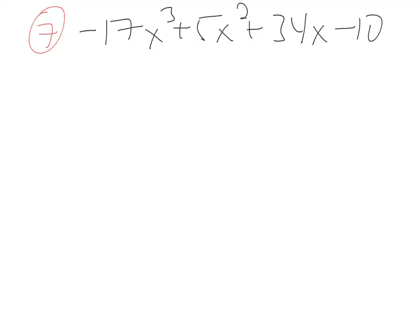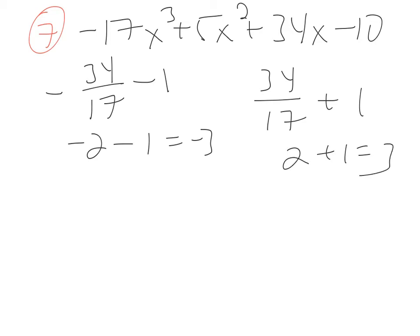Here's number 7 from that same page. Let's think about Cauchy's bound. I'm seeing the largest coefficient is 34, and here's the leading coefficient of 17. Remember, we take the absolute value. So I'm going to do negative 34 over 17 minus 1, and positive 34 over 17 plus 1. That's going to be negative 2 minus 1 is negative 3, and positive 2 plus 1 is positive 3. So Cauchy's bound says all these rational roots are going to be between negative 3 and positive 3.